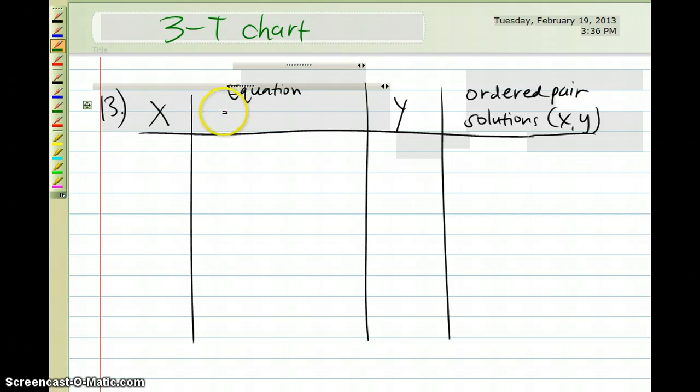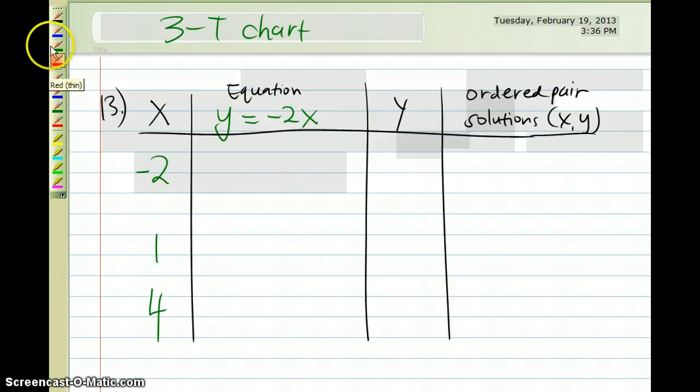And here's my equation here, that the equation gives me y is equal to negative 2x. And the x's that I've been given is negative 2, 1, and 4. Here, the color green is representing what is already given from the book. And from here, I'm just going to plug each of those numbers in.